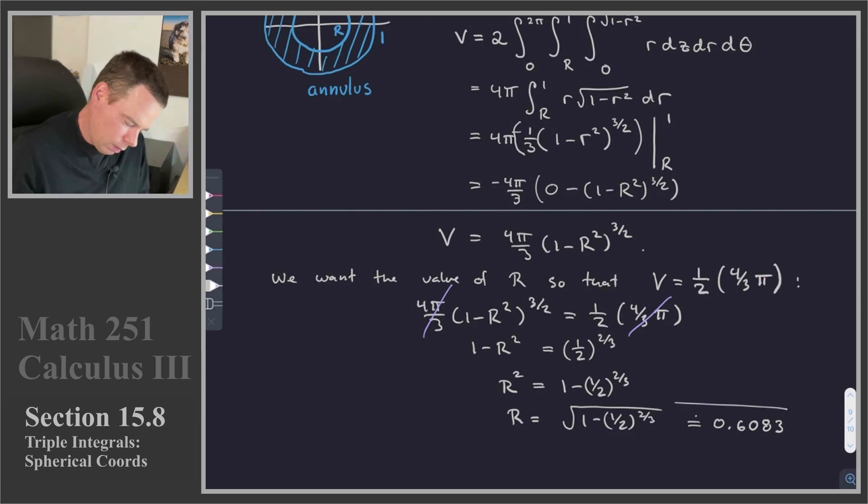And so that is how big the hole should be. It should be about 60% of the original radius. So the original radius was 1, so we should drill about 0.6. And we will remove half of the volume if we do that.